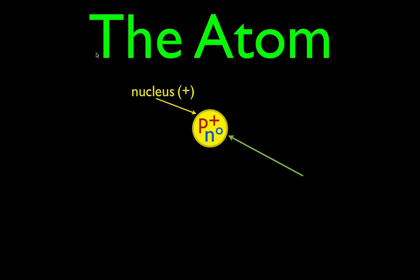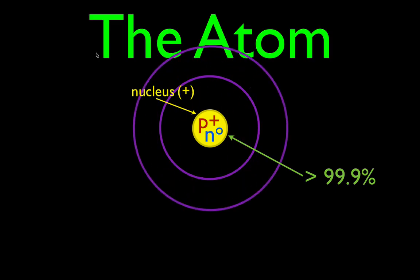In the nucleus, there is over 99.9% of an atom's mass. Well, where is that missing less than one-tenth percent of the mass? Well, it's in these things that go around the atom, which we call the energy level.